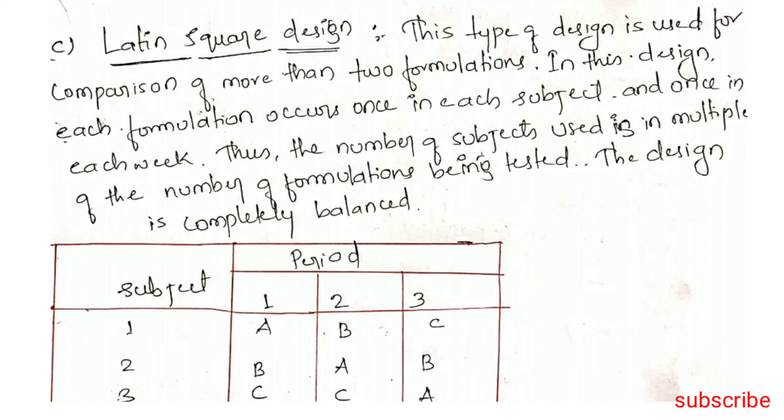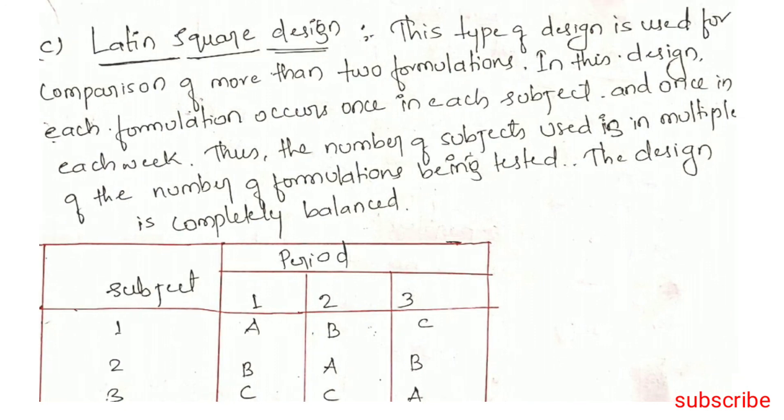Latin Square Design: This type of design is used for comparison of more than two formulations. Each formulation occurs once in each subject and once in each week. The number of subjects used is a multiple of the number of formulations being tested, and the design is completely balanced.